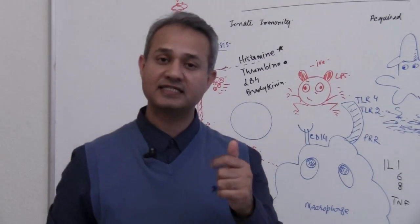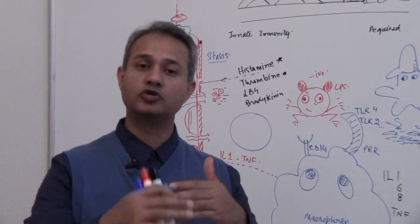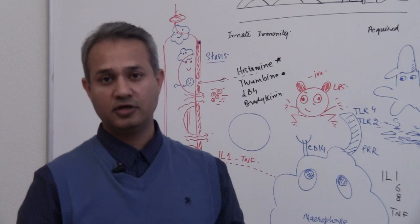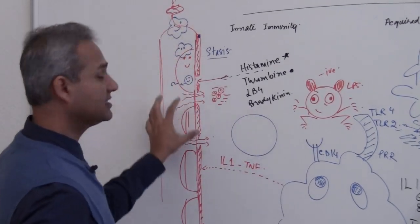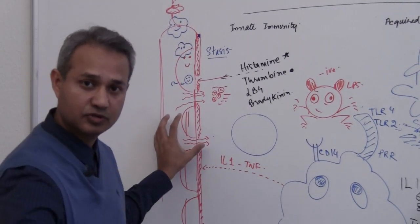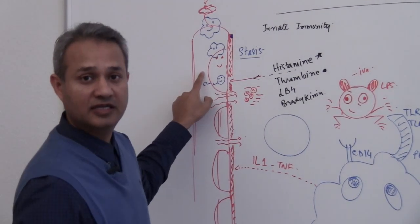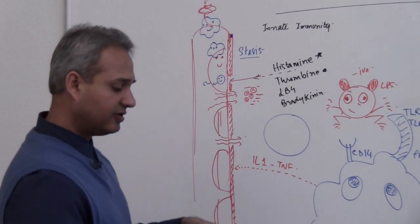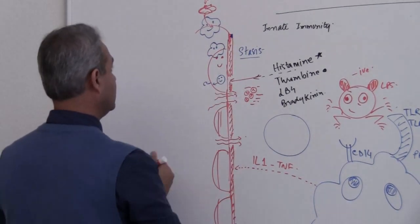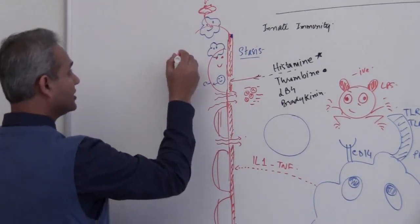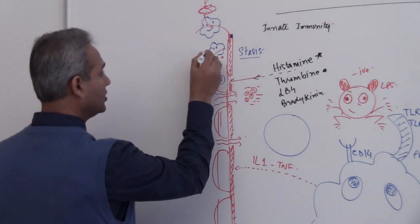The important thing is that selectins are used for rolling of the neutrophil. The neutrophil got marginated because of the stasis of the blood and the RBCs pushing it to the side. Now it is rolling on the endothelial cells. The neutrophil itself has a selectin molecule on it as well.